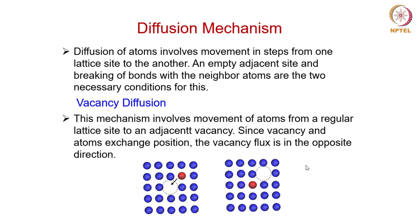There are certain mechanisms by which this atomic transport happens and some models have been proposed with regard to that. First of all, atoms move in steps from one lattice site to another empty adjacent site, and breaking of bonds with neighboring atoms are the two necessary conditions for this to happen. Certain models have been proposed for how atoms actually move from one lattice site to another, and we are going to discuss those models to understand and get a picture of atomic movement inside a material during diffusion.